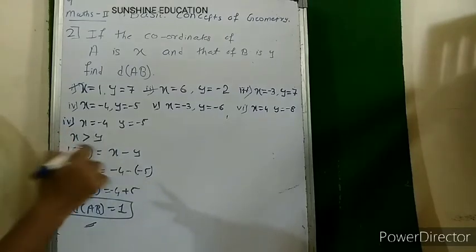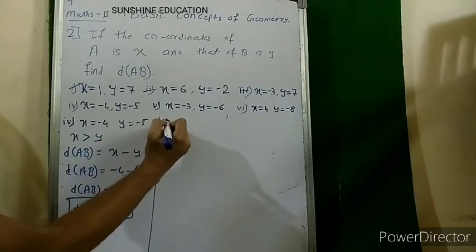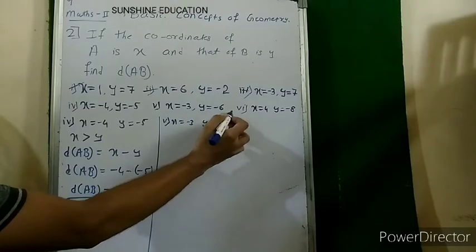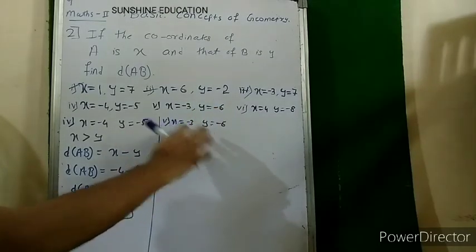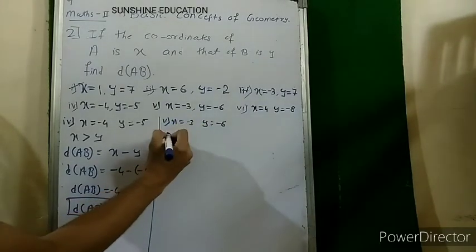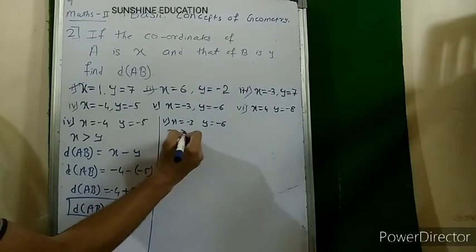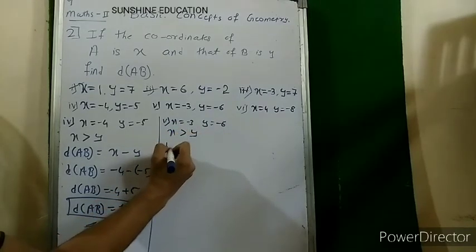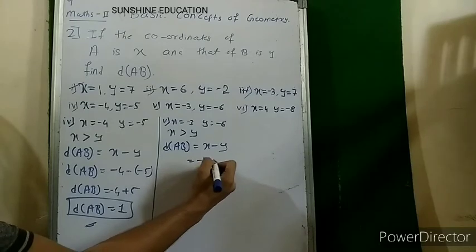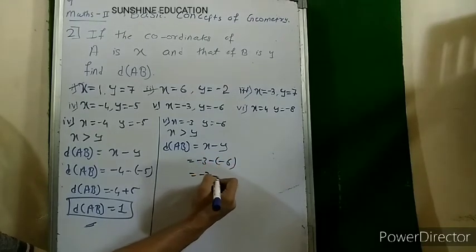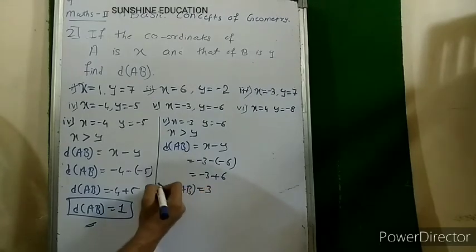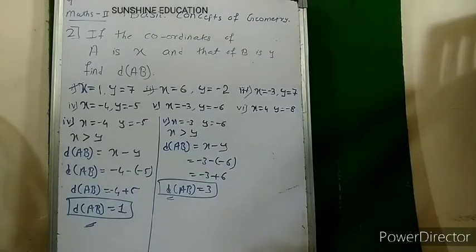Fifth sub-question: x = minus 3 and y = minus 6. Both are negative, so the one with smaller absolute value is greater. Minus 3 is greater than minus 6, so x is greater than y. Distance AB = x minus y = minus 3 minus (minus 6) = minus 3 plus 6 = 3.